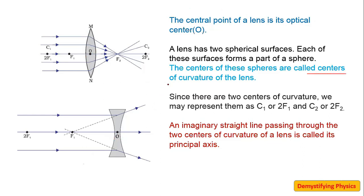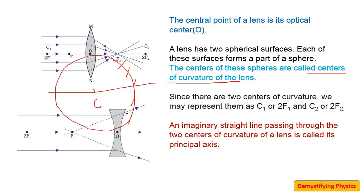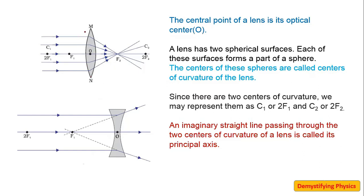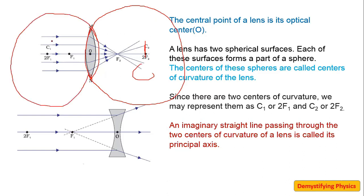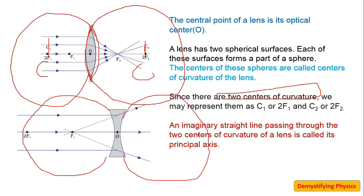Next is center of curvature. In a mirror, it is the center of the sphere of which the mirror is a part. Similarly, for a lens we have two spheres because we have two spherical surfaces. Completing the sphere of each spherical surface gives us a center, so we have two centers of curvature. This applies to both convex and concave lenses. We denote them as C1 and C2, or 2F1 and 2F2, because the radius of curvature is two times the focal length — therefore C1 can be written as 2F1.